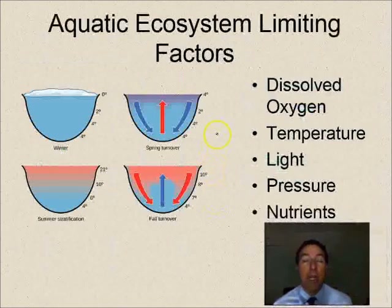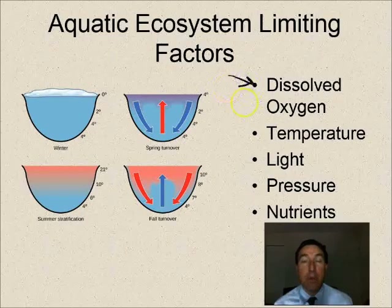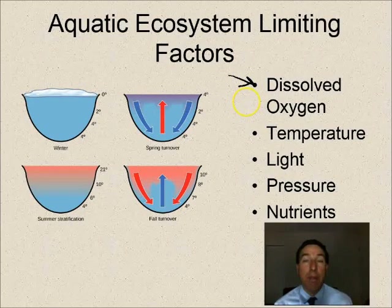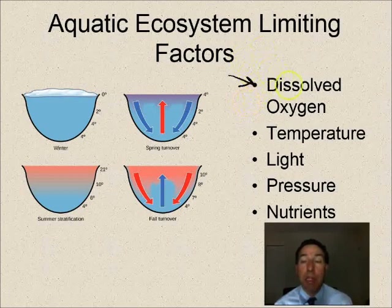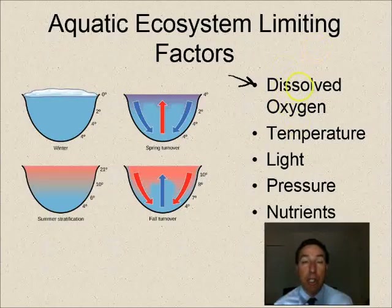Some of the limiting factors that aquatic ecosystems face are a bit different than terrestrial ones. For example, dissolved oxygen — in terrestrial ecosystems oxygen is all around us in the atmosphere, but when you get deep into certain aquatic ecosystems, dissolved oxygen can be a problem unless you have really good water flow, and all living organisms need oxygen to survive.